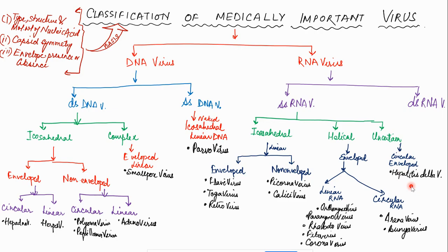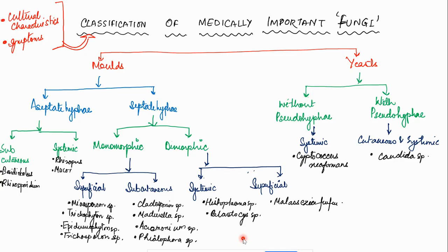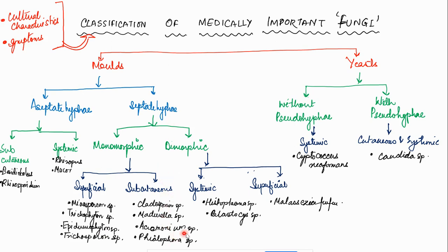Fungi are important pathogenic organisms causing many diseases. On the basis of cultural characteristics and symptoms, they are classified into molds and yeasts. Molds may have aseptate or septate hyphae. Aseptate molds cause subcutaneous and systemic infections. Septate hyphae molds can be monomorphic or dimorphic. Monomorphic septate molds cause superficial infections; examples are Microsporum, Trichophyton, Epidermophyton, and Trichosporon. Subcutaneous monomorphic septate molds include Cladosporium, Madurella, Acremonium, and Phialophora.